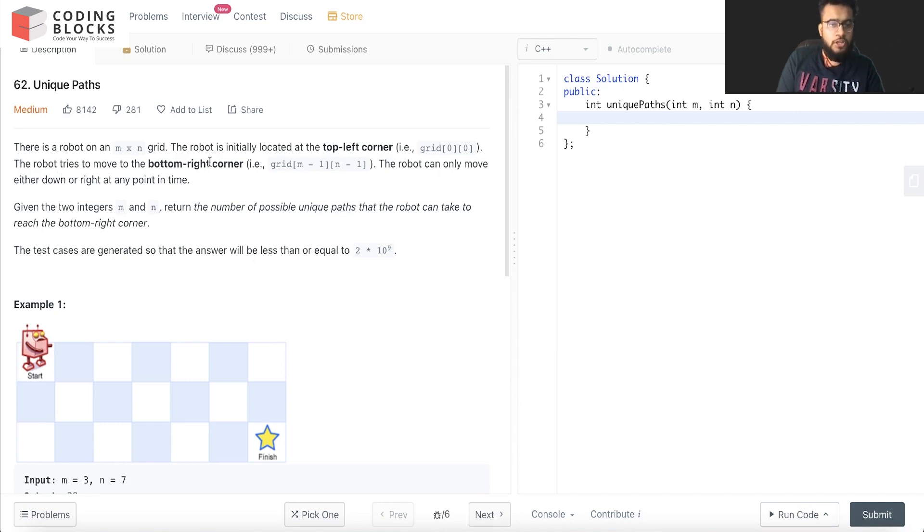The robot tries to move to the bottom right corner. It can only move either down or right at any point of time. We have been given two integers and we need to find the possible unique paths. The test case constraints say it is up to 10 to the power 9, so we cannot use recursion directly as it will give us a TLE.